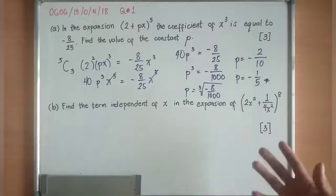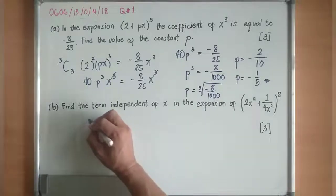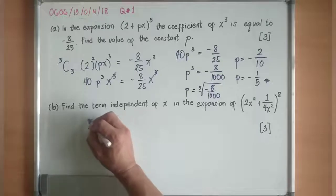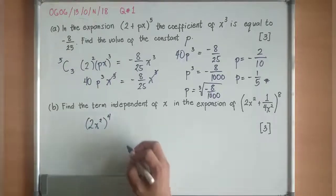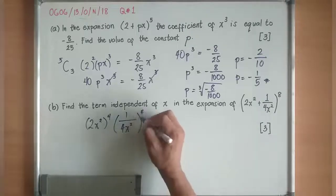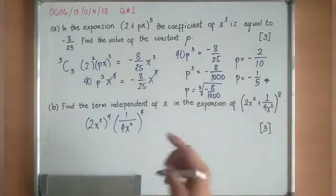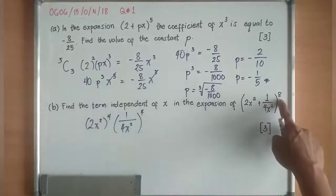So if you want to find out something that is independent of x, you have to balance also by dividing 8 into 2 equal indices. So I'll divide it into 2 equal indices. It's 4 and 4. This will become (2x^2)^4 and (1/4x^2)^4. Why 4 and 4? 4 plus 4 is 8.